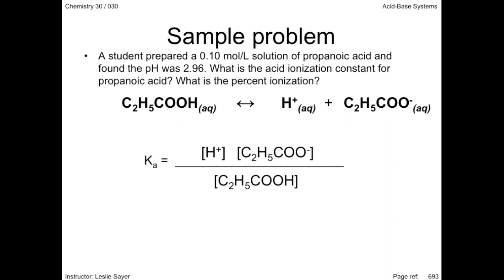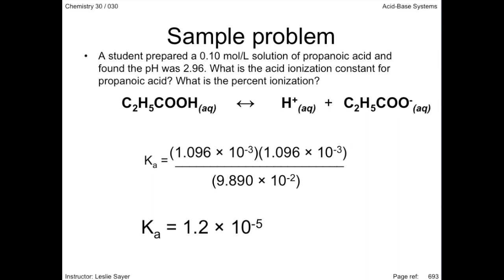We now substitute in the equilibrium concentrations. So the Ka for this ionization reaction is 1.2 × 10^-5. So we've answered the first part of the question.